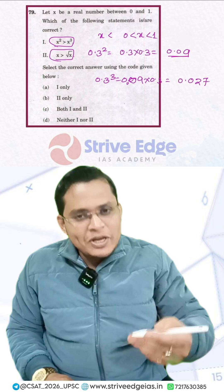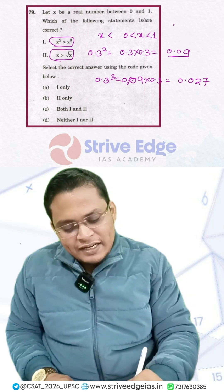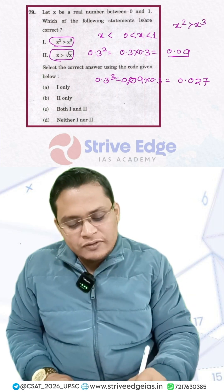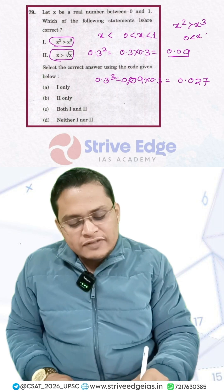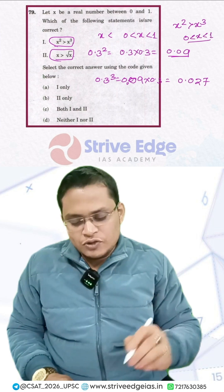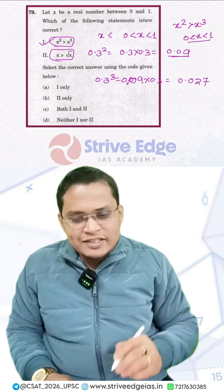By looking into that I can say yes, definitely my x square is more than x cube if x value is lying between 0 to 1. So first statement is correct. Let's see the second statement.